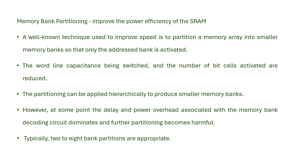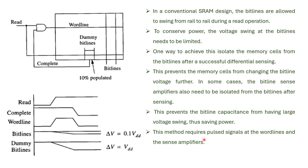Two to eight or three to eight bank partitioning are appropriate. In a conventional SRAM, the bit lines are allowed to swing rail-to-rail during a read operation — rail-to-rail means supply to ground. To conserve power, the voltage swing at the bit lines needs to be limited. One way to achieve this is to isolate the memory cells from the bit line after a successful differential sensing. This prevents the memory cells from changing the bit line voltage further. In some cases, the bit line sense amplifiers also need to be isolated from the bit line after sensing, preventing the bit line capacitance from having large voltage swings, thus saving power.